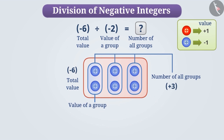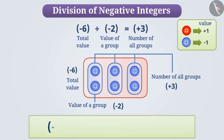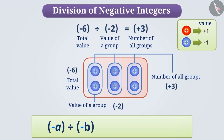The value of each group will be minus 2. We can say that minus 6 will have three groups of minus 2, so minus 6 divided by minus 2 is equal to plus 3. In broad terms, we can say that the quotient obtained by dividing any two negative integers is positive. Your divisor cannot be zero.